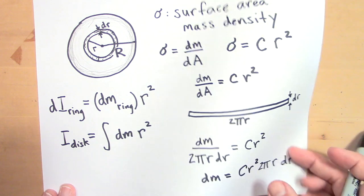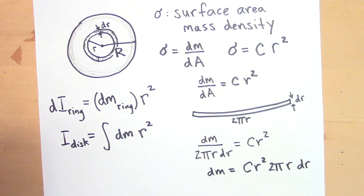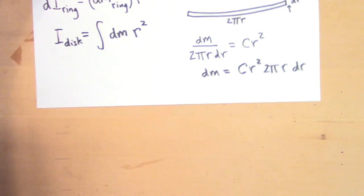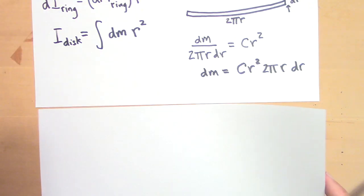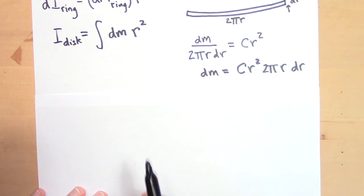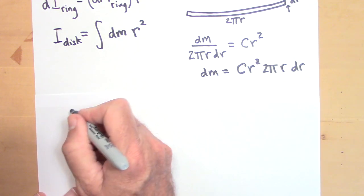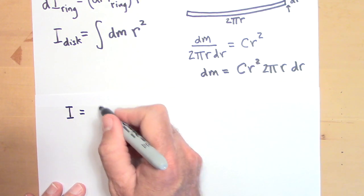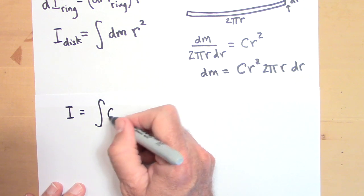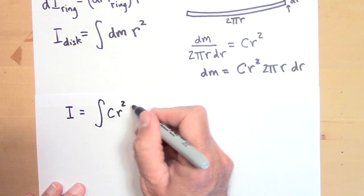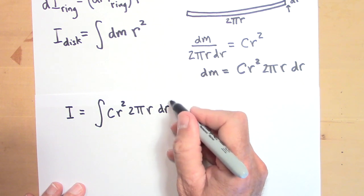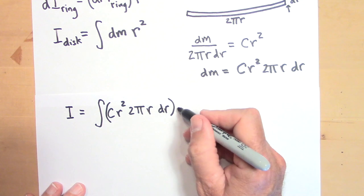Okay. So here it goes. I'm going to go ahead and, I think I'm going to go to another sheet of paper now. So I'm going to bring these over here and I'm going to put in for dM in this integral. So the I of the disc is equal to the integral of dM, but that's going to be Cr squared 2 pi r dr times r squared.